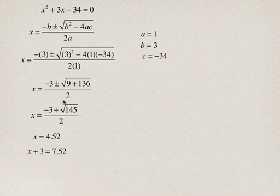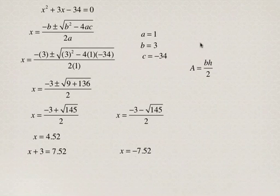Now, remember this is plus or minus, so we have to consider the situation where we're subtracting the square root, the discriminant. Then what we're going to end up with is x equals negative 7.52. And we can immediately eliminate that, because we cannot have a negative value for the base length.